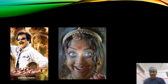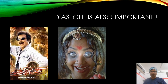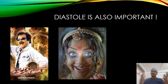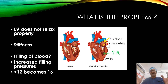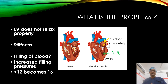Sometimes outcomes are decided by diastole also. The problem with diastolic dysfunction is that the LV does not relax properly - it gets stiff. When you have a stiff LV, filling of blood is slow and there is an increase in pressure. With a stiff LV, pressure rises with filling - filling pressures may become very high, even up to 60.